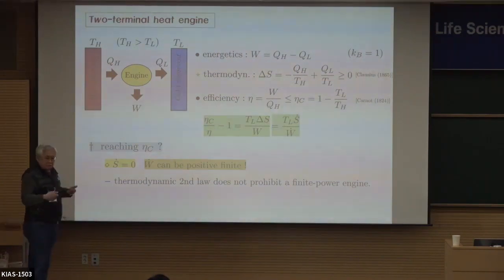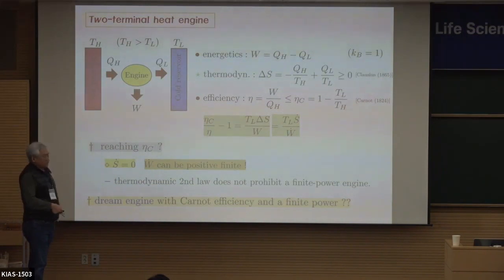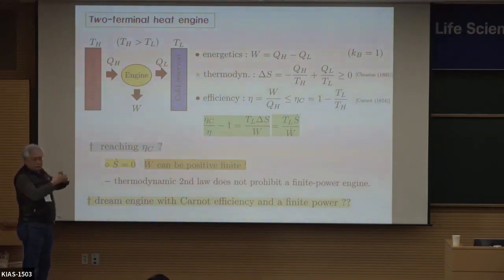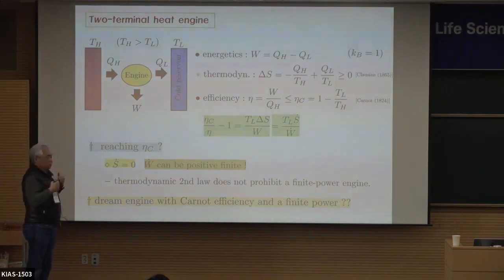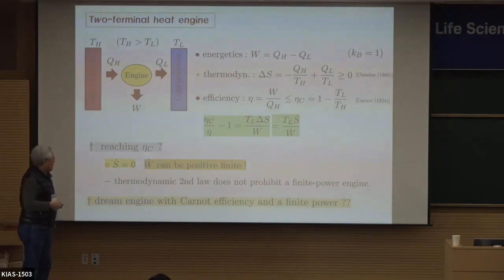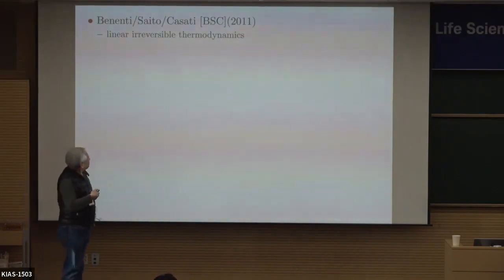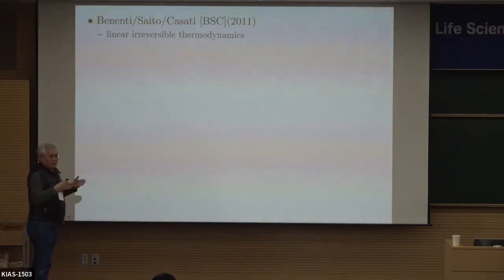You can in principle have finite power — it's not banned by the thermodynamic second law. This engine with Carnot efficiency and finite power is what people usually call the 'dream engine,' because people thought that if you have Carnot efficiency, somehow you cannot have power. But even if you have maximum efficiency with finite power, it would be a very useful engine. So this is a kind of dream.